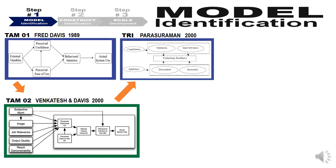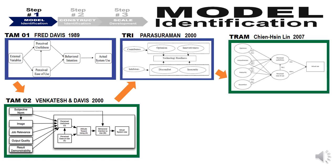In the same year, Parasuraman introduced the Technology Readiness Index (TRI). If the TAM model talks about the consumer behavior mind when it comes to actual adoption of technology, TRI talks about the gestalt of emotions one goes through before getting ready for a particular technology. On the driver side: optimism and innovativeness; on the inhibitor side: discomfort and insecurity. In 2007, Chian Hissin Lin combined TRI and TAM to produce the TRAM model — optimism, innovativeness, discomfort and insecurity at the first level driving perceived usefulness and ease of use, which then drives actual usage.